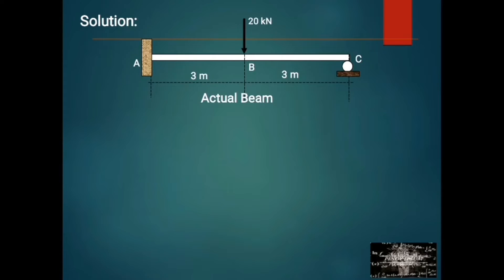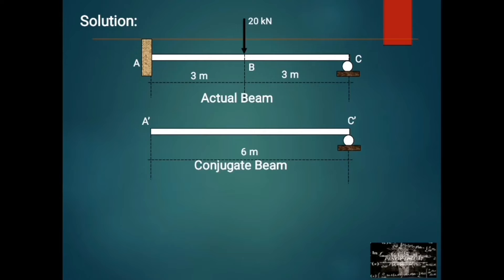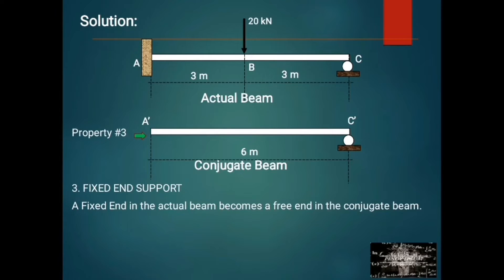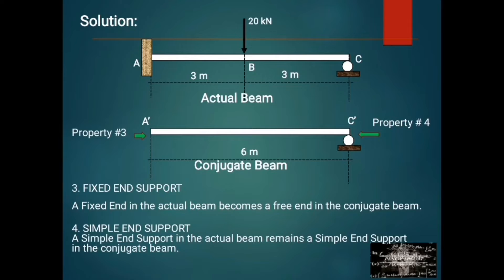We have the actual beam, then the conjugate beam having the same span. At point A prime, we apply property number 3: a fixed end support in the actual beam becomes a free end in the conjugate beam. For point C prime, we apply property number 4: a simple end support in the actual beam remains a simple end support in the conjugate beam.